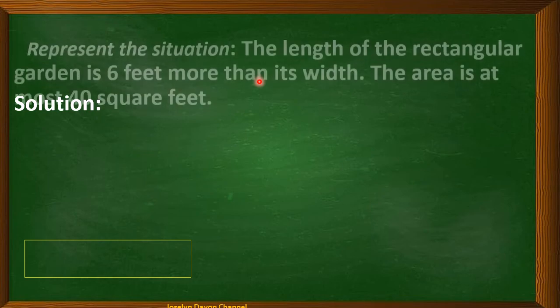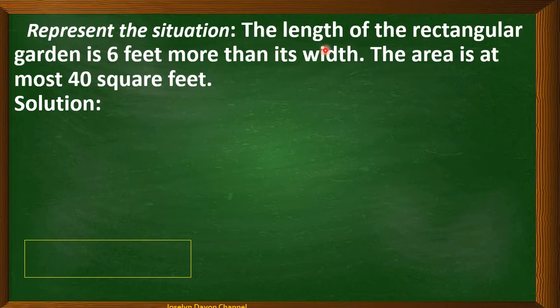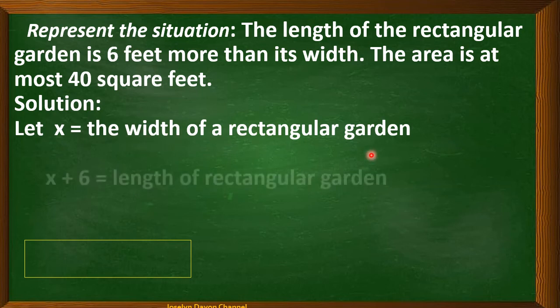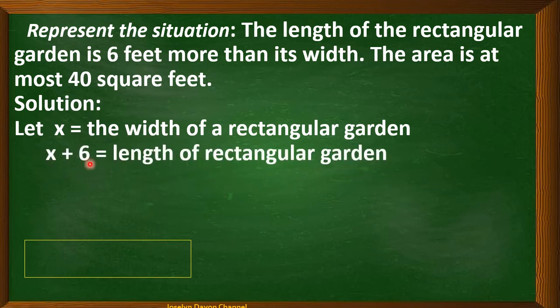Let's represent the situation. The length of a rectangular garden is 6 feet more than its width, and the area is at most 40 square feet. We assign x as the width and x + 6 as the length of the rectangular garden.